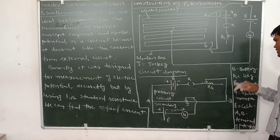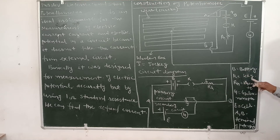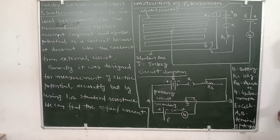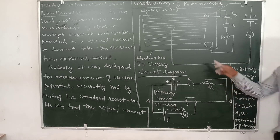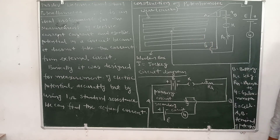To summarize the components: battery connects to the key, key to the rheostat RH, G is the galvanometer, E is the cell, and A and B are the terminals of the potentiometer wire.